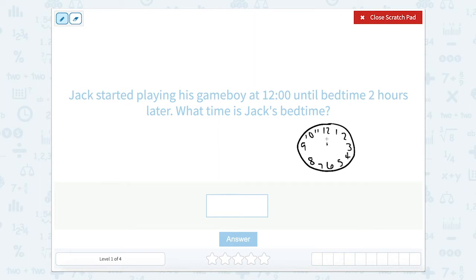So the hour hand is pointed towards the 12, and Jack's bedtime is two hours after 12. So if we keep going around this clock, we start at 12, we go one hour, we're at one o'clock, and if we go two hours, we're at two o'clock. So it would be two o'clock when it would be Jack's bedtime.